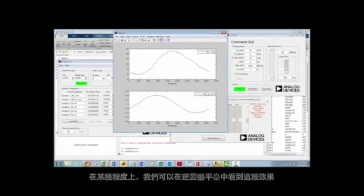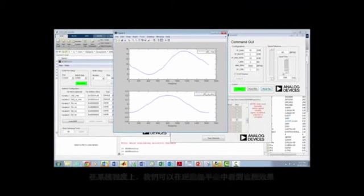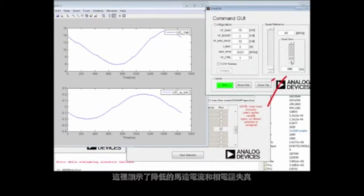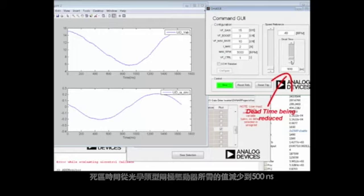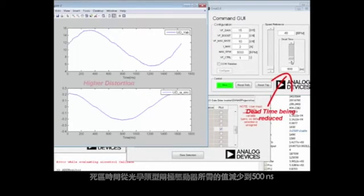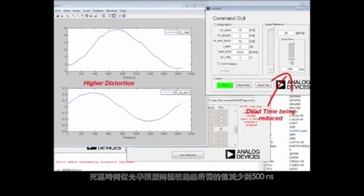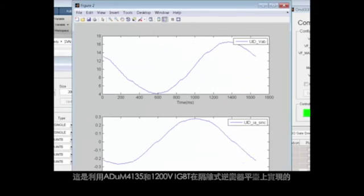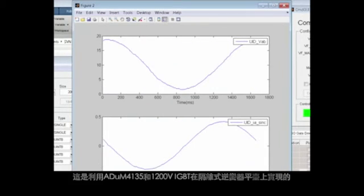We can see this effect to some extent in the inverter platform. Here we show the reduced motor current and phase voltage distortion when the dead time is reduced from the values required by optocoupler type gate drivers to the 500 nanoseconds achievable using the ADUM4135 in conjunction with the 1200 volt IGBTs on the isolated inverted platform.